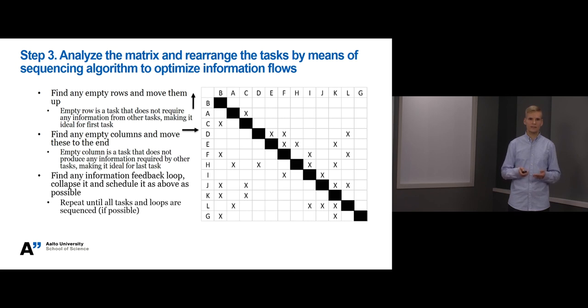Let's practice this together. First we can identify that task C requires information from task B and provides information to task A. In turn, task A is dependent on the information from task C, but task A does not produce information to task C. So we should move task C up before task A.